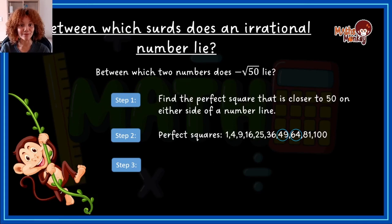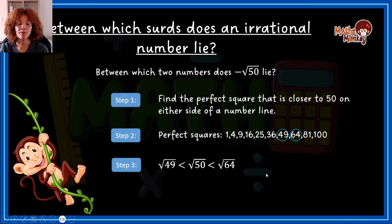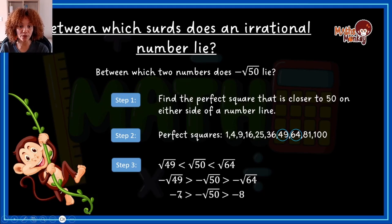Now let's do another one: between which two numbers does negative √50 lie? The approach for a negative value is exactly the same as for the positive — the only difference comes toward the end. We start with the same result as before. Then we change everything to negative, and whenever we divide by a negative in an inequality, we change the direction of the signs.